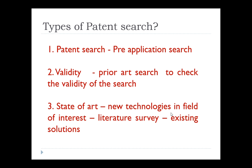The second is validity search. As a reminder, a patent is valid for 20 years. Validity search is a prior art search to check the validity of existing patents. For example, if there are around 20,000 inventions related to 'pen,' you can check which of those 20,000 are still valid and which have expired.